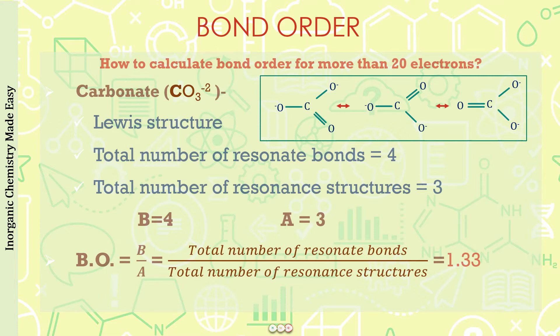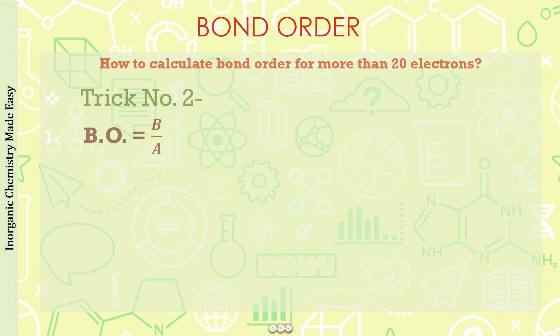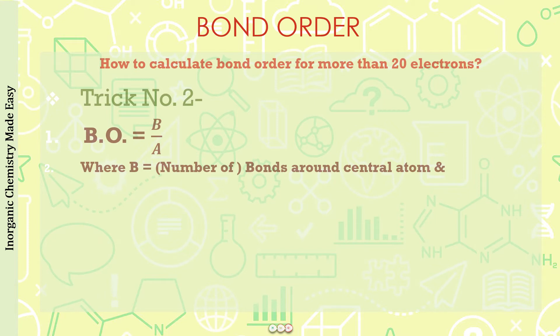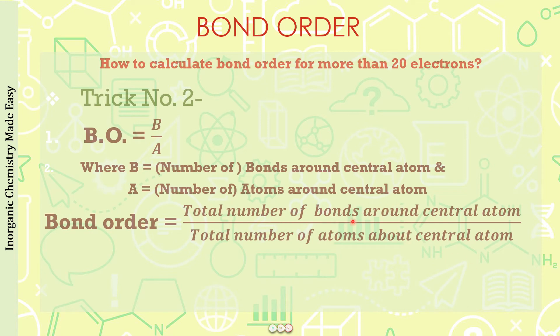Now trick number two. Again bond order equals B divided by A, but B and A are slightly different here. B is the number of bonds around the central atom, and A is the number of atoms about the central atom. So bond order equals total number of bonds around the central atom over total number of atoms about the central atom. This is more advantageous because you will not have to draw the resonating structures — just draw one lowest structure for the given species.